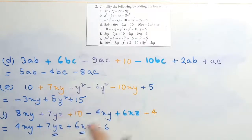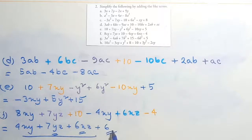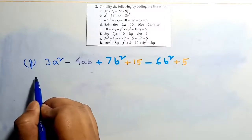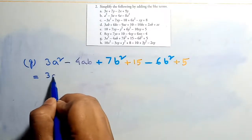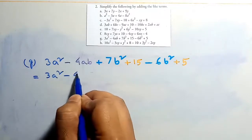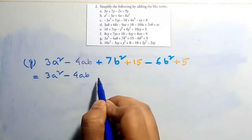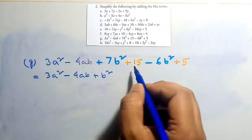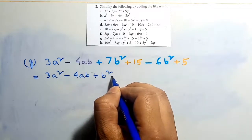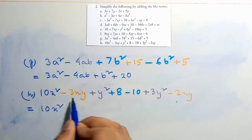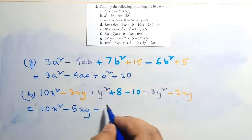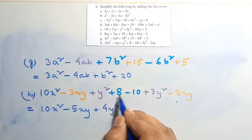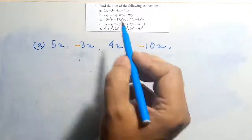When doing these questions, write terms in alphabetical order and place constant terms last. 3a² has no like term, so write 3a² as is. Then 4b plus 7b² minus 6b² gives plus b². Constants 15 plus 5 give 20. For 10x² minus 3xy minus 2xy gives minus 5xy, plus y² plus 3y² gives 4y², and 8 minus 10 gives minus 2.